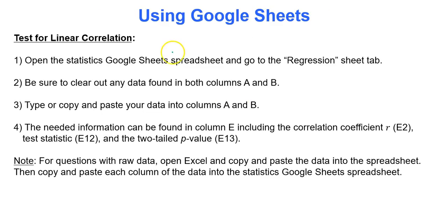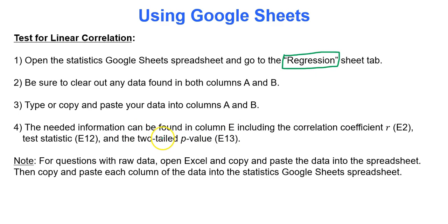To conduct the test for linear correlation, we'll use Google Sheets on the regression tab. We'll clear out any data in columns A and B, then copy, paste, or type the data into those columns. We'll find the correlation coefficient r, test statistic, and the two-tailed p-value in column E.